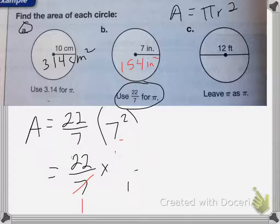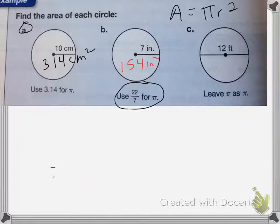On the last one, it wants us to leave pi as pi, which means we will not be multiplying it by 3.14 or anything else.